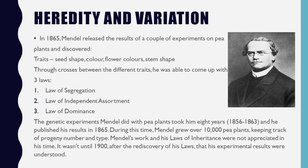When he conducted crosses on different pea plants with different traits — including the shape of the seed, the color of the seed, the shape of the flower, the color of the flower, and the structure of the stem — through all these results he was able to come up with three different laws: the law of segregation, the law of independent assortment, and the law of dominance. This experiment took him eight years, and he grew over ten thousand pea plants, keeping track of every single one.